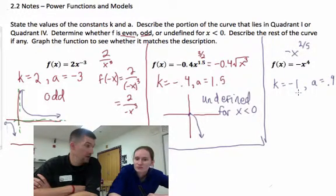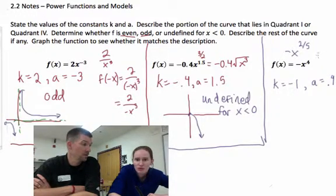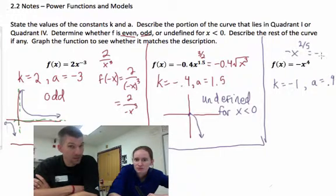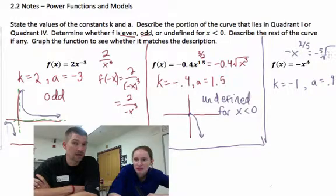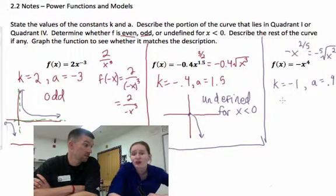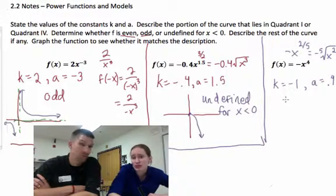Alright, so quick recap. We're talking about x to the squared, x squared, fifth rooted. So, fifth rooted x squared. Can I take a fifth root of anything?